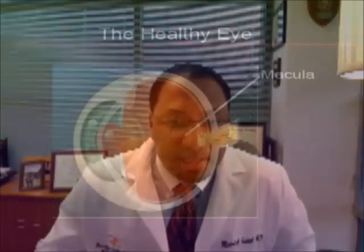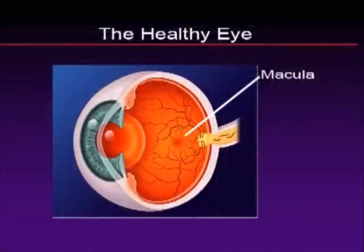Let's review some basic anatomy. Most of this will be very basic for us, but the cornea is the front part of the eye, the lens sits behind it, and the macula is the area between the two vascular arcades coming off the optic nerve.